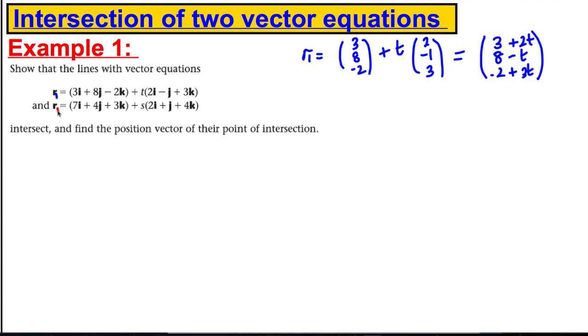Now let's do the same with this one, which we might call r₂. So r₂ is going to be (7, 4, 3) plus s lots of (2, 1, 4). So combining these, it would be 7+2s, 4+s, and 3+4s.